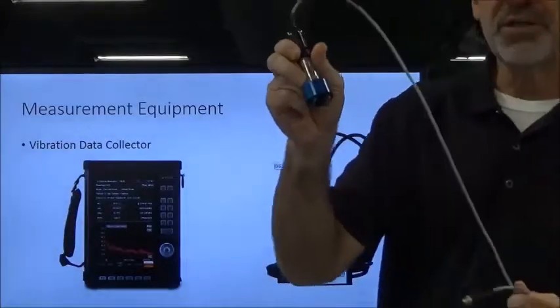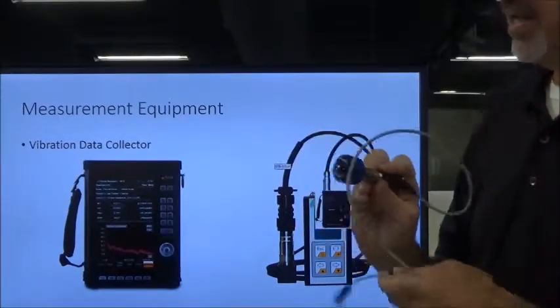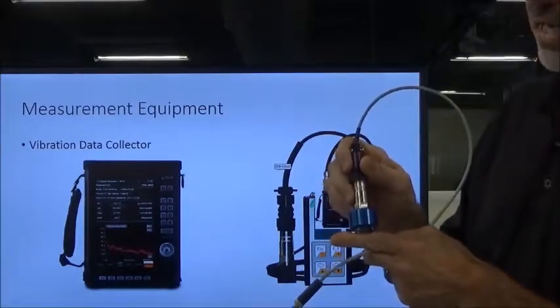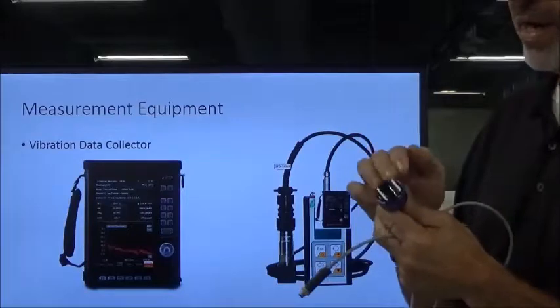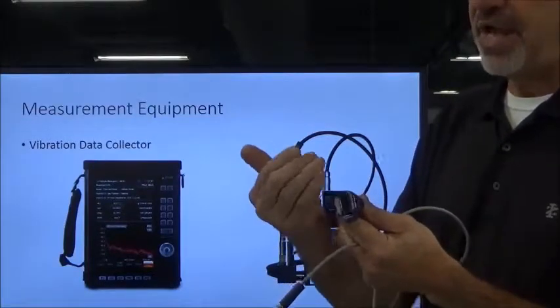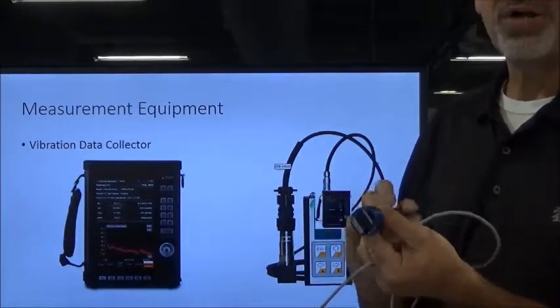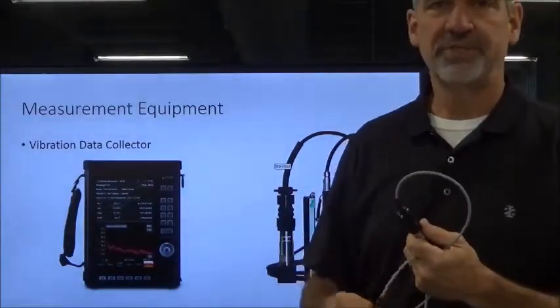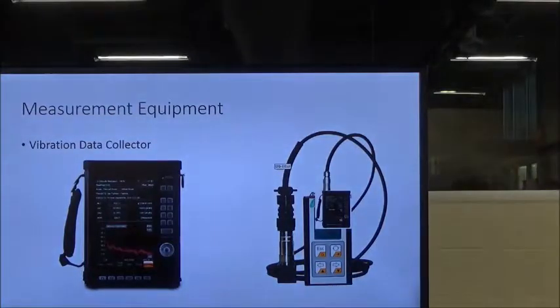This is an accelerometer, very typical. You'll hear this called a transducer or a pickup. In essence, this one has a couple of rare earth magnets that it will connect itself to a motor and attach itself. What's going on inside here are you've got a couple of crystals, and one is acting on the other. As the machine vibrates up and down, one crystal impacts the other and it creates a millivolt signal, an analog millivolt signal up through the cable, and then it goes into the iPad where it's converted to digital information where we can make sense of it and see it on a spectrum.